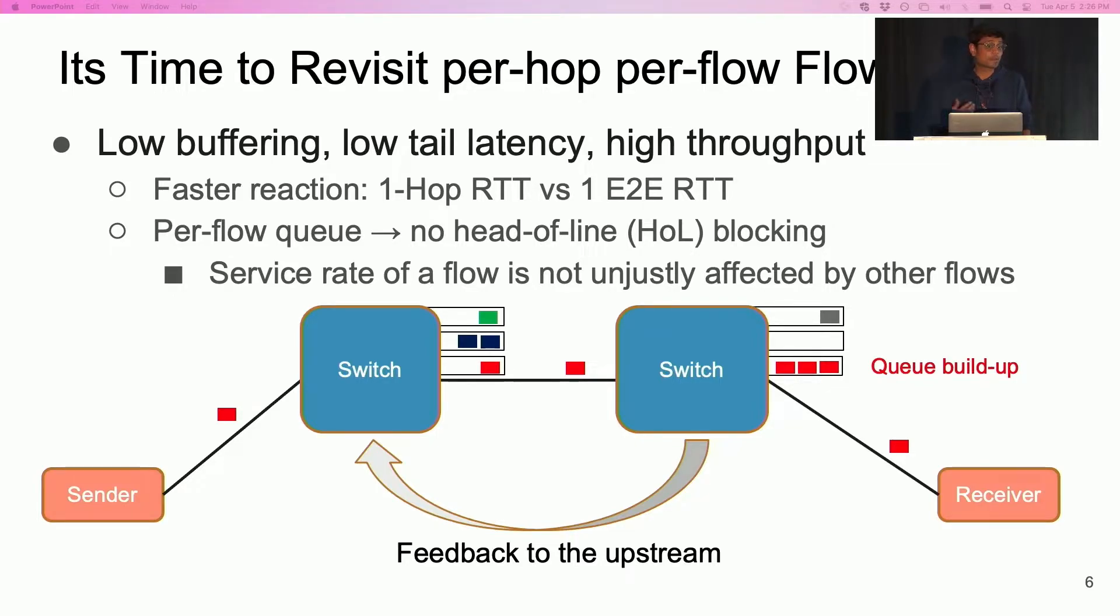However, despite all these advantages, per hop per flow control is not deployed in data center networks today. The problem is that modern switches have limited capabilities and it is very hard to implement such an architecture.